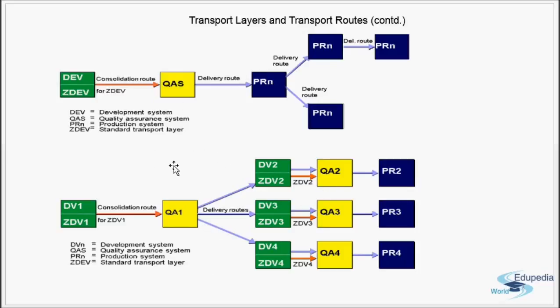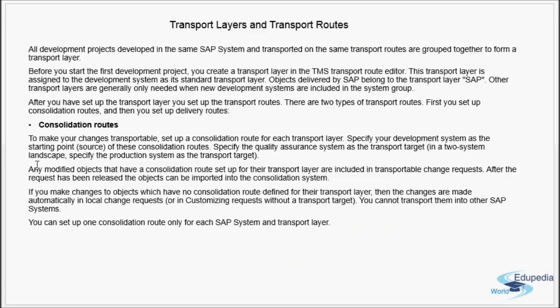The route from development to quality is known as the consolidation route. This is in a three-system landscape. In a two-system landscape, where development and QA are on one system, the target will be production. But in a real-time scenario, we generally have a three-system landscape, so the route from development to QA is always known as the consolidation route. Any modified object that has a consolidation route set up for its transport layer is included in the transportable change request. After the request has been released, the objects can be imported into the consolidation system.